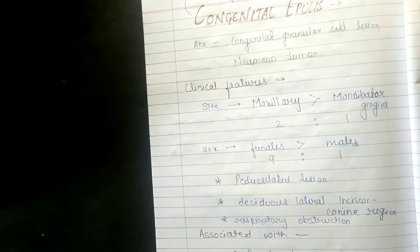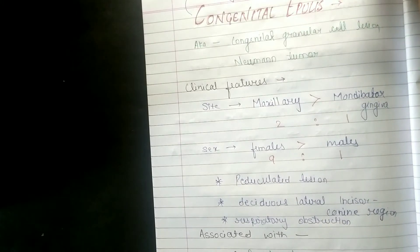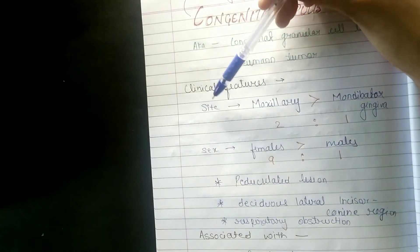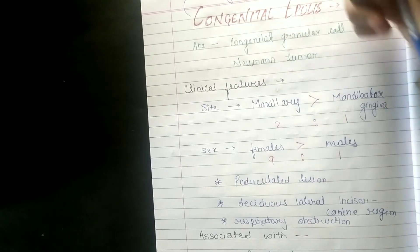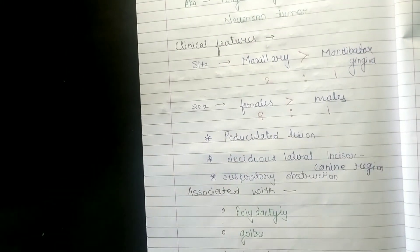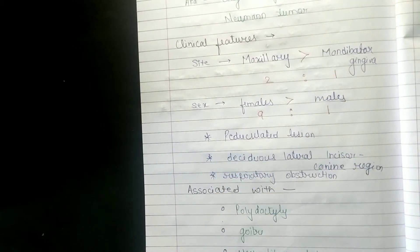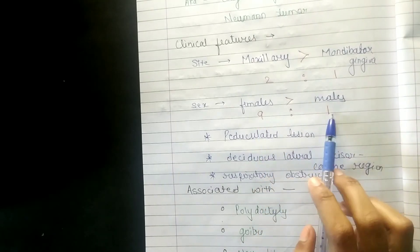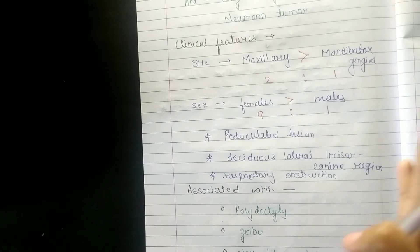Single lesions can be seen but sometimes multiple can be seen. In clinical features, this site is mandibular and maxillary, but in maxilla there are more cases. So the ratio of maxilla to mandible is 2 to 1. Females are more commonly affected. You can see a huge difference - the ratio is 9 to 1.